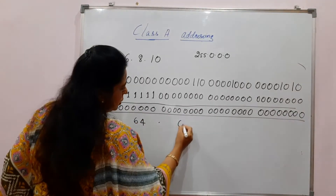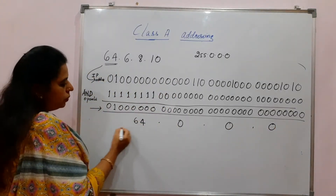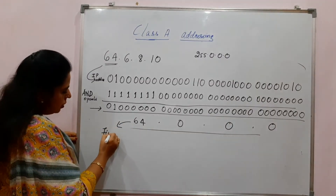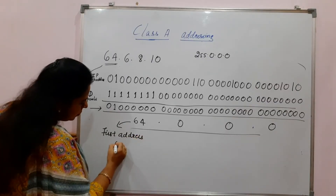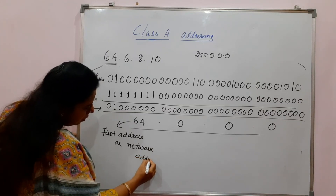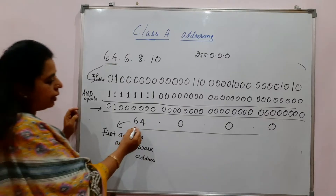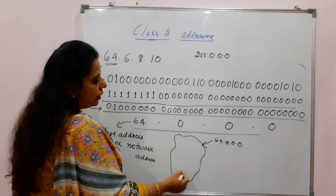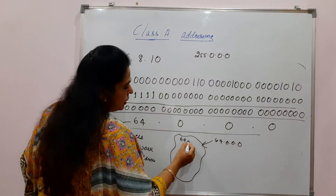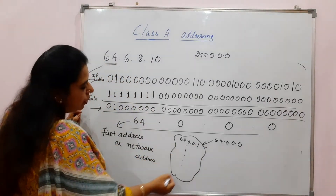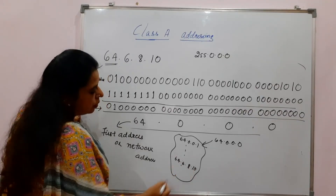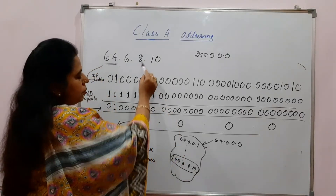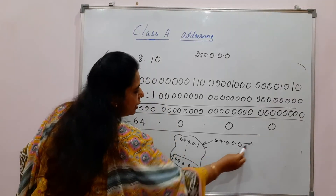The first octet is 64, followed by 0.0.0. Whatever result you get from this bitwise AND operation becomes your first address or the network address. For this network, the network address is 64.0.0.0, and 64.6.8.10 is one of the host addresses somewhere within that network. So you have found out the network address — this host connection is in the network with address 64.0.0.0.